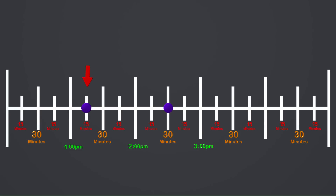So we start at 1:15 and jump 1 hour, and that takes us to 2:15. We have now jumped 1 hour, but we are still not quite there yet. We need to make one more jump — how many more minutes do we need to jump to make it to 2:30? We need to jump 15 more minutes. So the total amount we jumped was 1 hour and 15 minutes. Great job, guys! We just used a number line to solve a time problem.